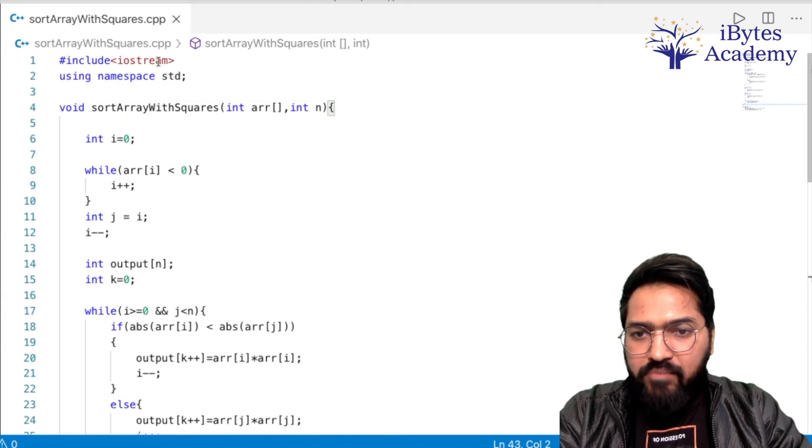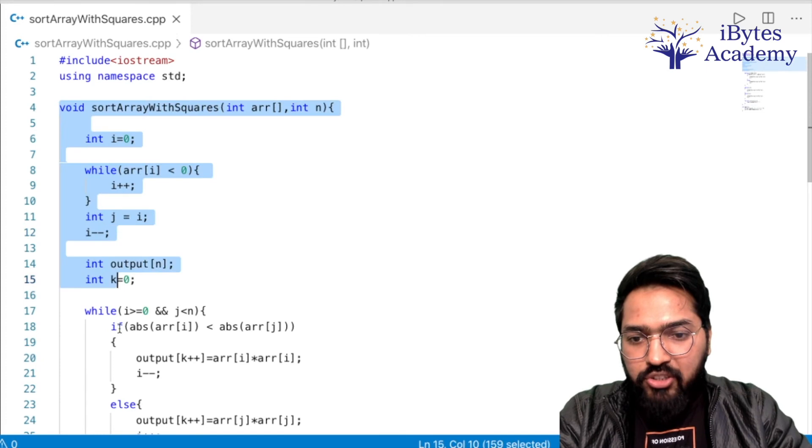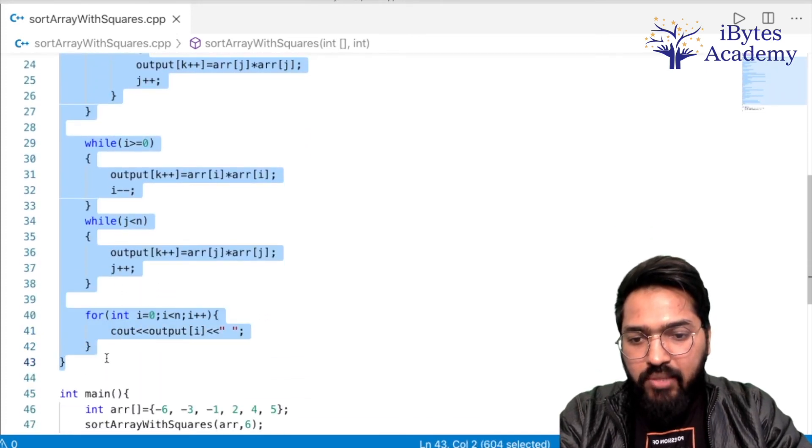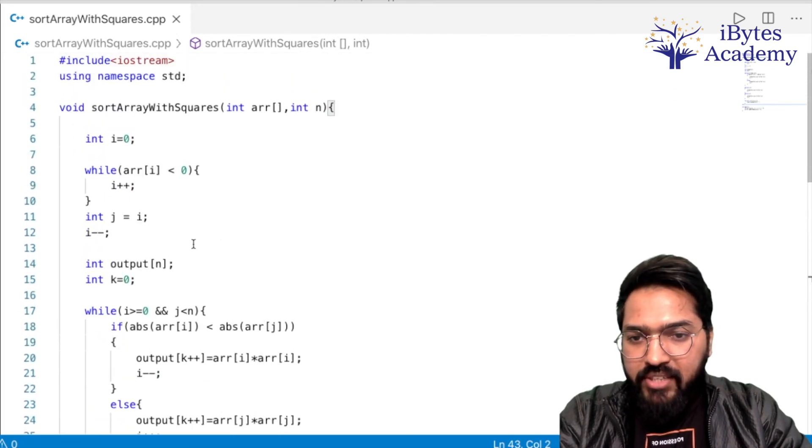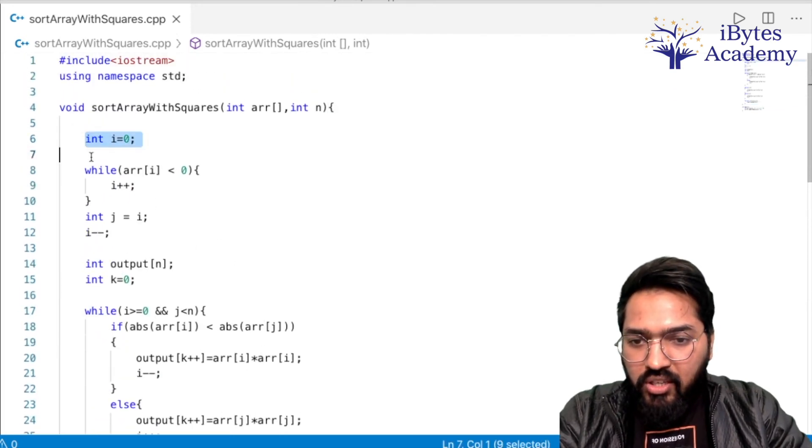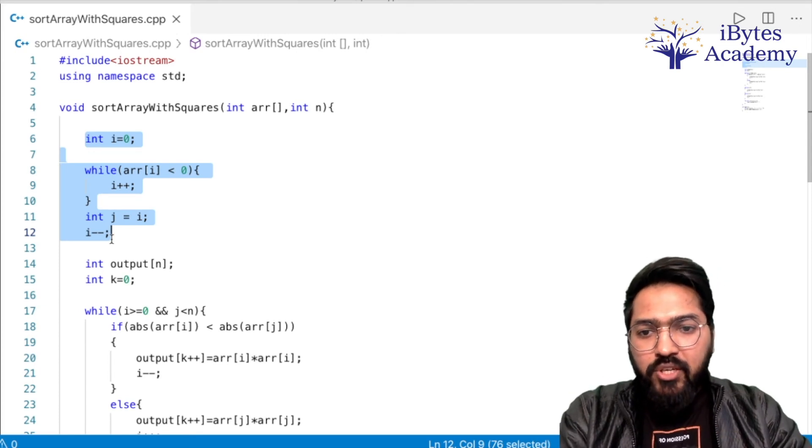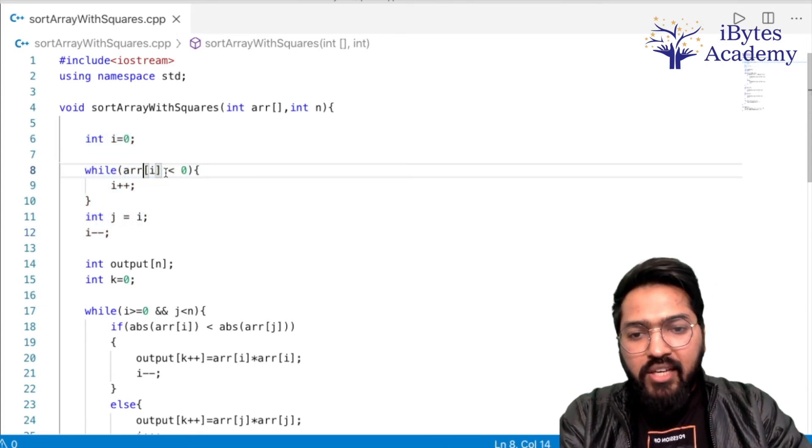So this is the code over here: include iostream using namespace standard aur yeh hummara function hoga. Aur uske baad hummara main function hoga. Chalo dekhte hain humm kaise karenge. To itna kaam humm log kar rahe hain partition karne ke liye.